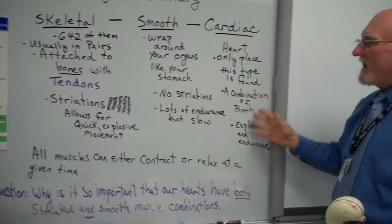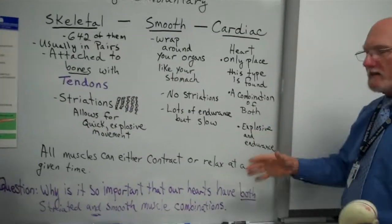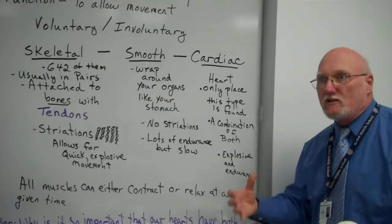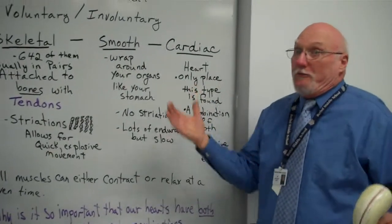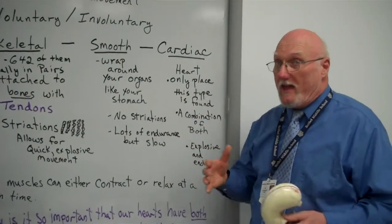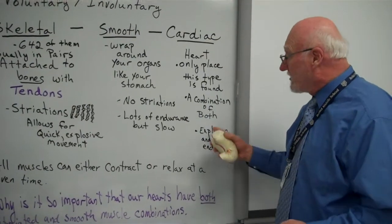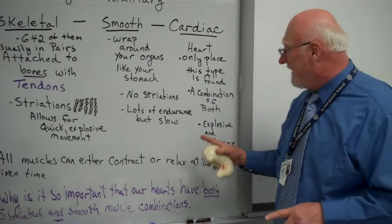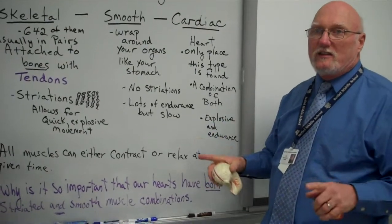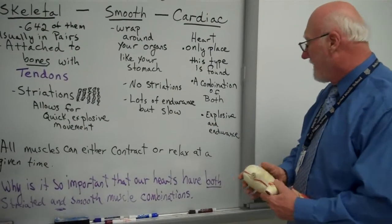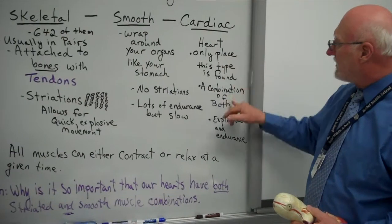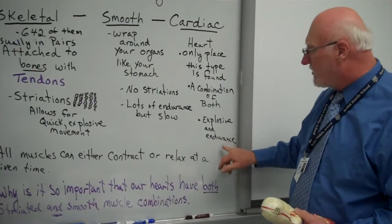Now, cardiac muscle is a combination of both. You get explosion when you need it. Your heart rate goes up to 150 times a minute when you're on that roller coaster. Or when you're sleeping, and a lot of people think when you're sleeping your heart shuts down. No, it doesn't. It might go down to maybe 70 or 60 beats per minute. Alright. So, with the heart tissue, you have an explosion and endurance.